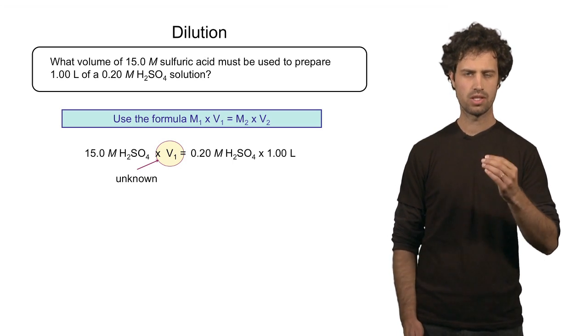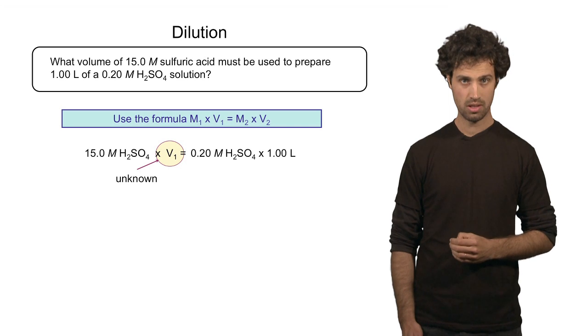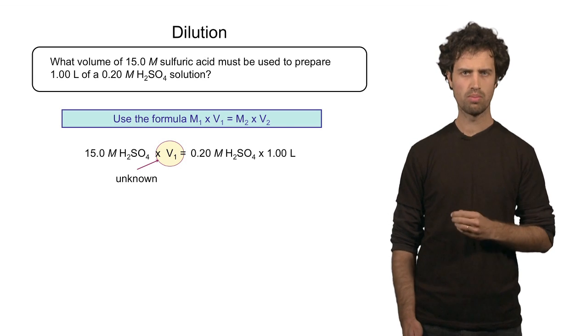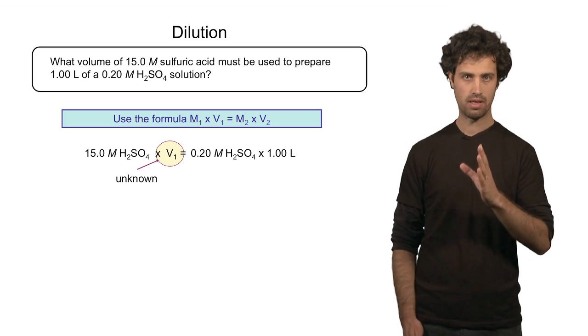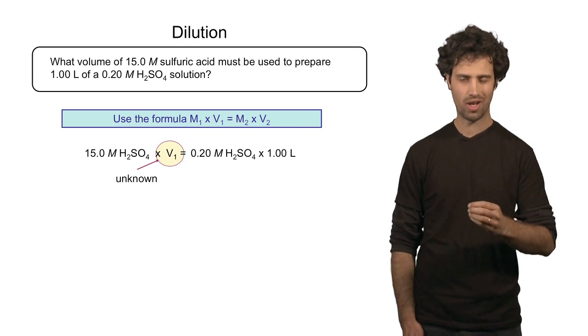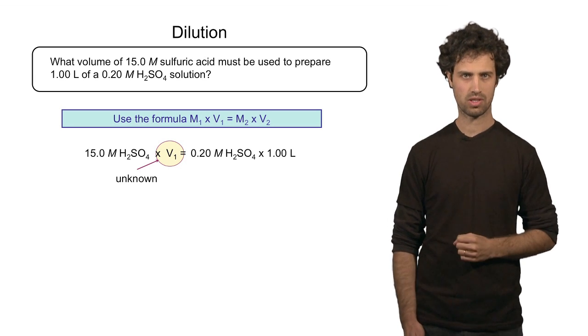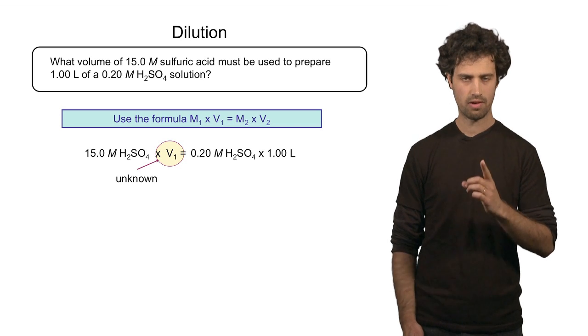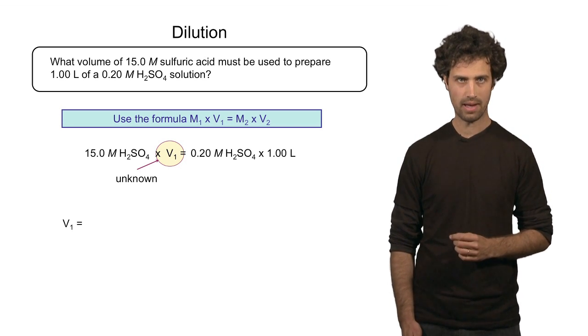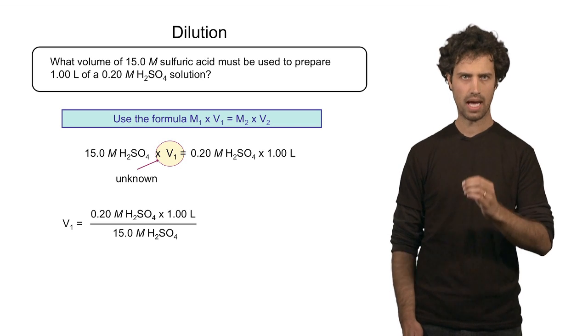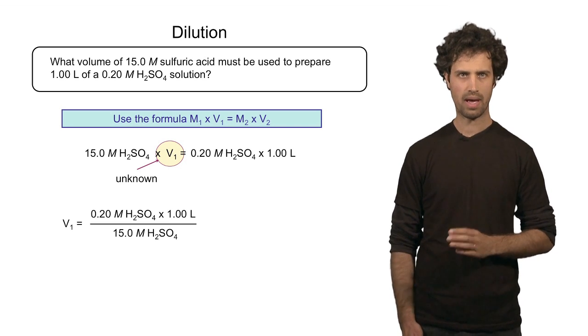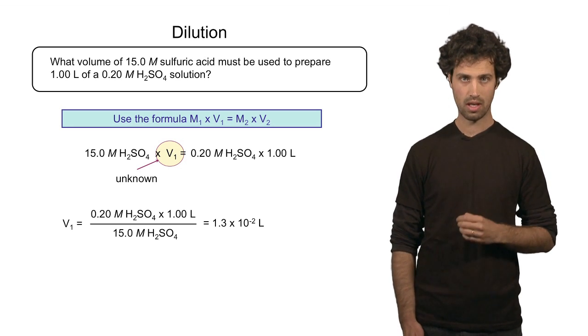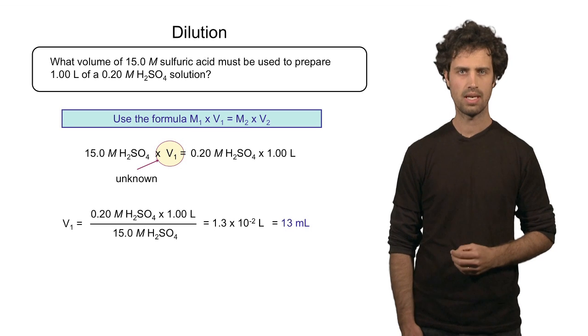M2 is the desired concentration of the solution to be prepared, that is 0.2 molar. And the final volume is 1 liter. So I have all the parameters here except for V1. I can calculate V1 readily: V1 equals 0.2 molar times 1 liter divided by 15 molar, which is 1.3 times 10 to the minus 2 liters, or 13 milliliters.